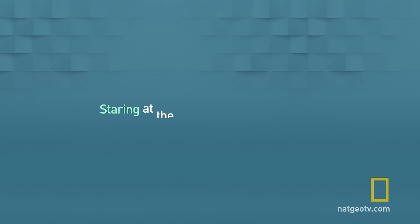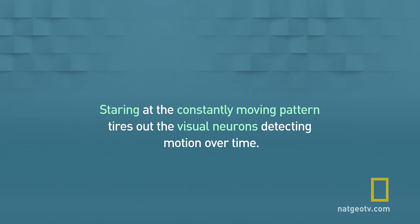Staring at the constantly moving pattern tires out the visual neurons detecting motion over time. When you stop looking at the image, your brain takes a few seconds to readjust, which makes it look like things are moving even when they aren't.